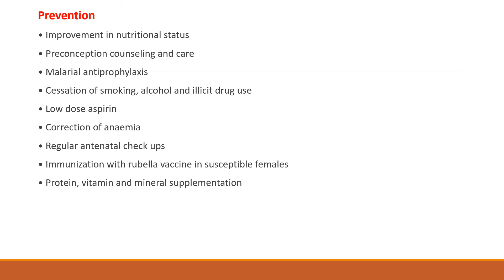Preventive measures include improvement in maternal nutritional status, pre-conceptional counseling and care, malaria chemoprophylaxis particularly in endemic regions, cessation of smoking, alcohol, and illicit drug use, use of low-dose aspirin, correction of anemia, regular antenatal checkups, immunization with rubella vaccine in susceptible females, and supplementation with adequate proteins, vitamins, and minerals.